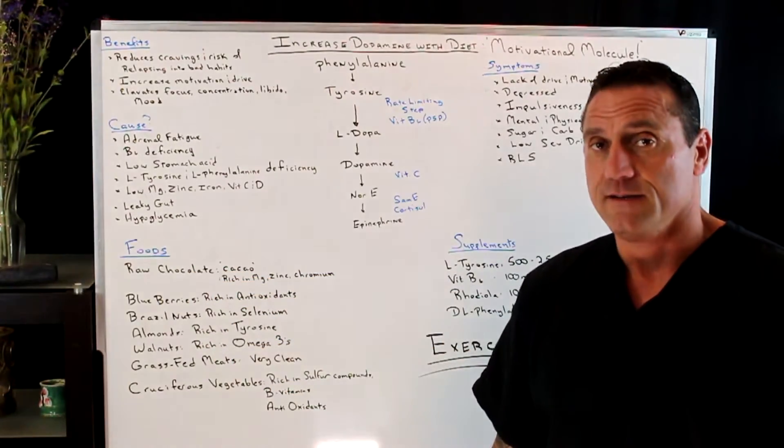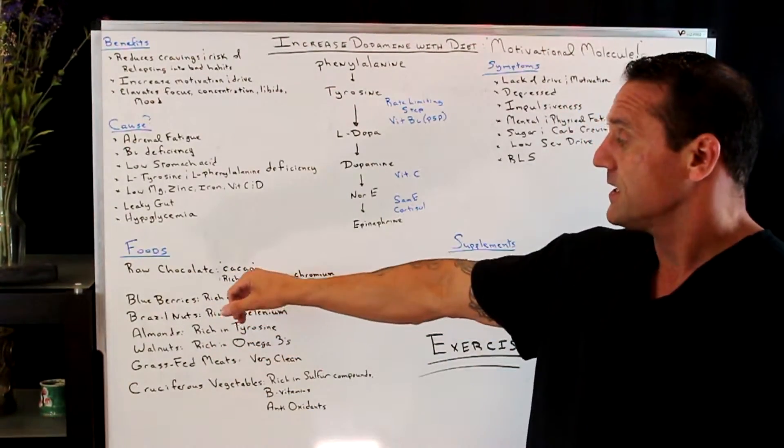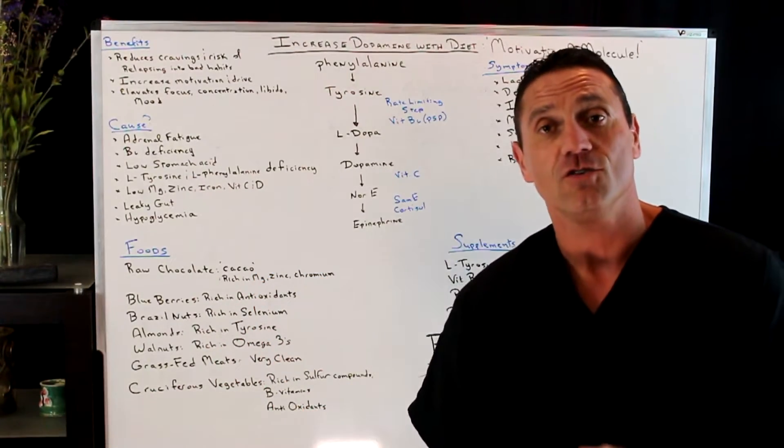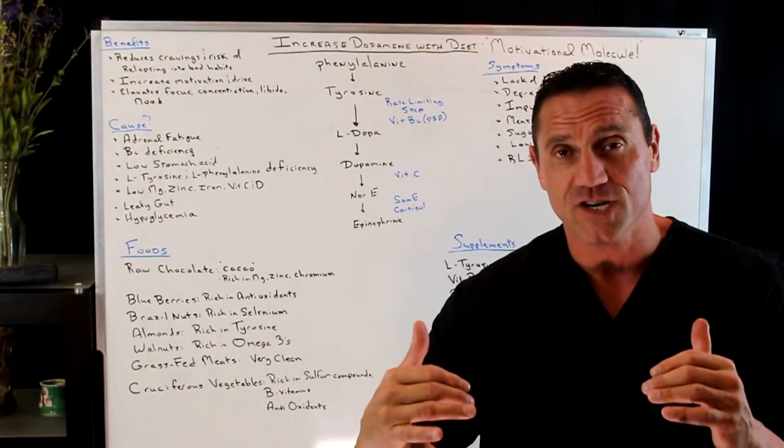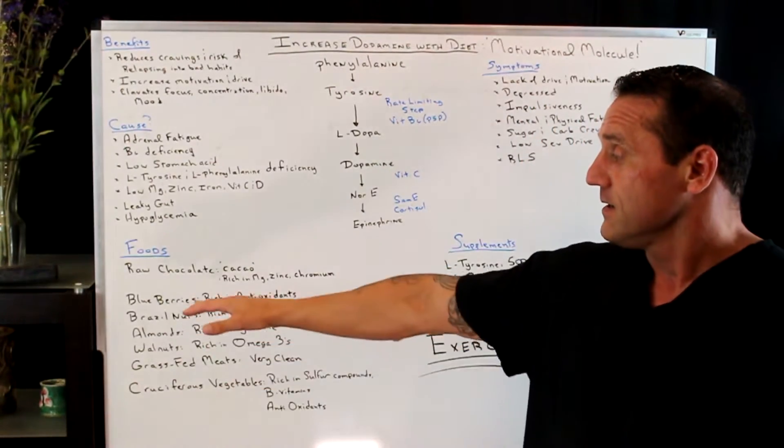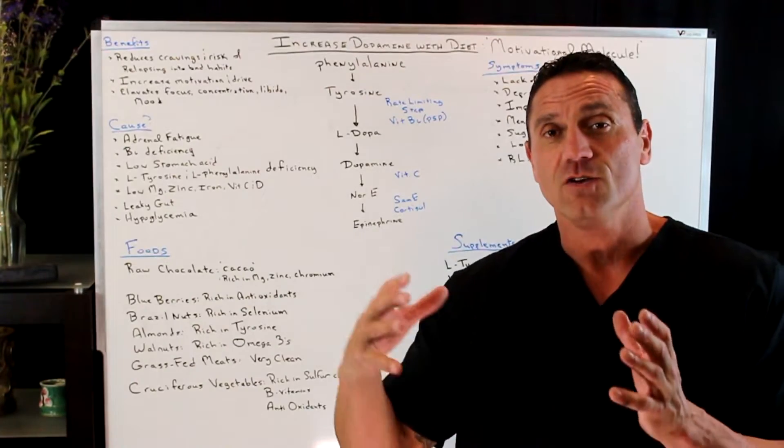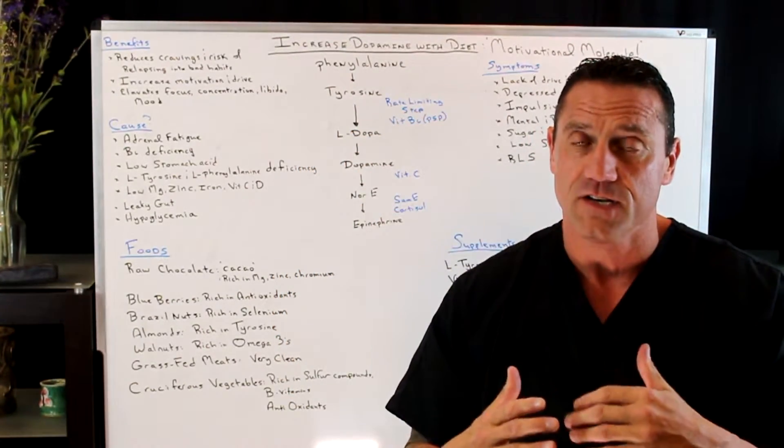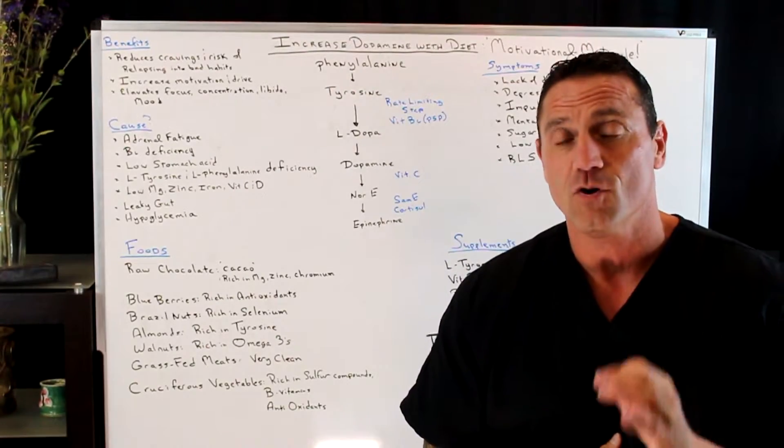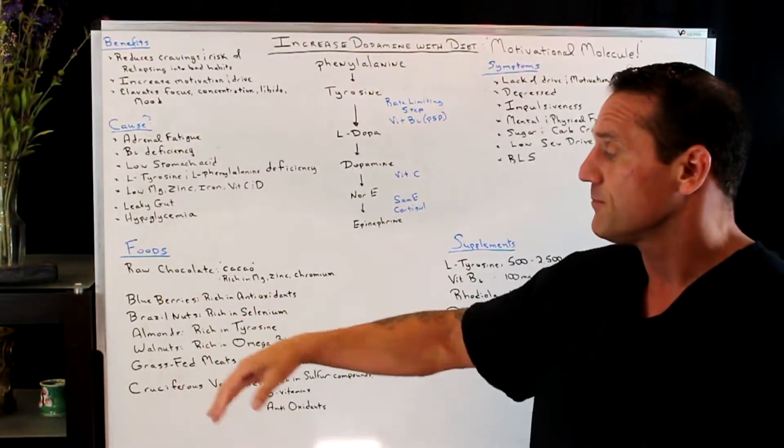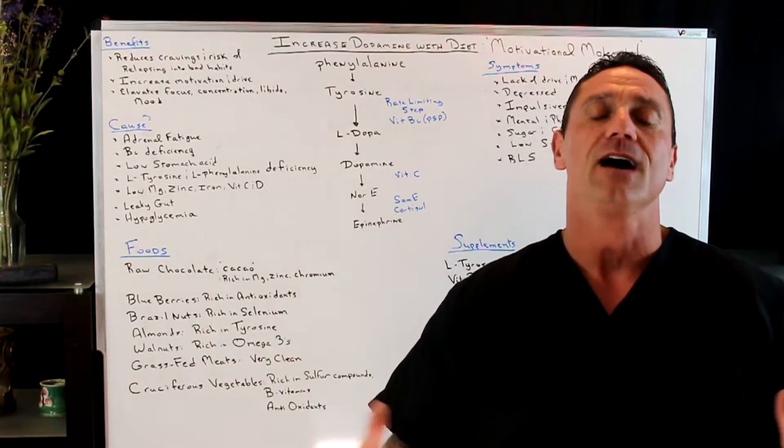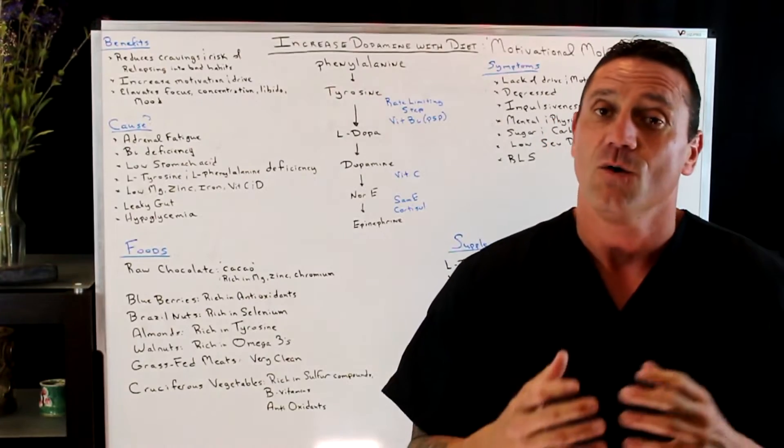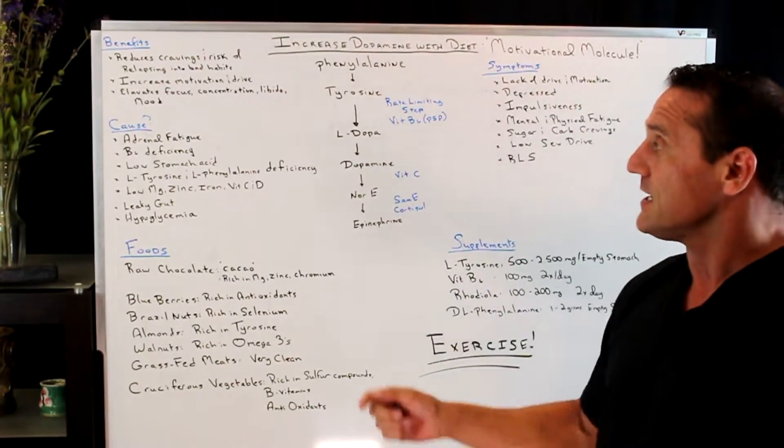So then foods: raw chocolate, cacao. It's rich in magnesium, zinc, and chromium. Chromium is good to help stabilize blood sugar. Blueberries, rich in antioxidants. Remember, you want to decrease the systemic inflammation so your stomach works appropriately. Blueberries are rich in antioxidants. Brazil nuts are phenomenal in selenium. Selenium is good for the thyroid. One of the things that helps with the thyroid hormone is L-tyrosine.